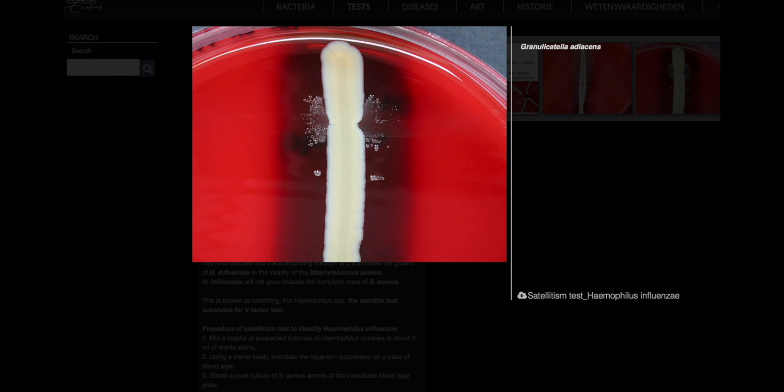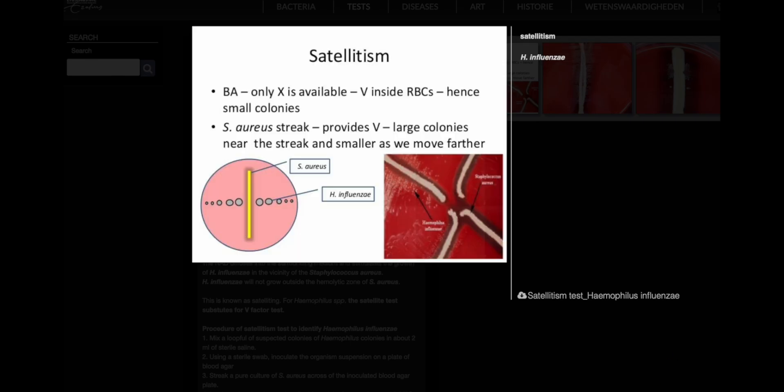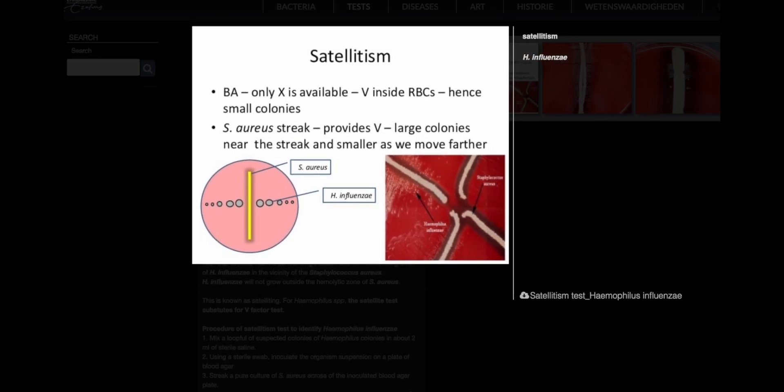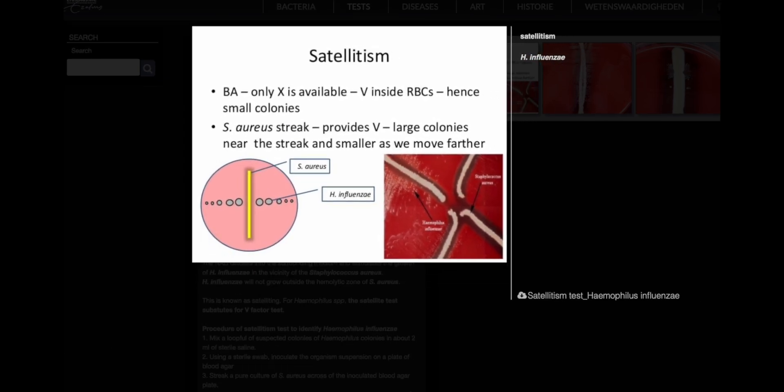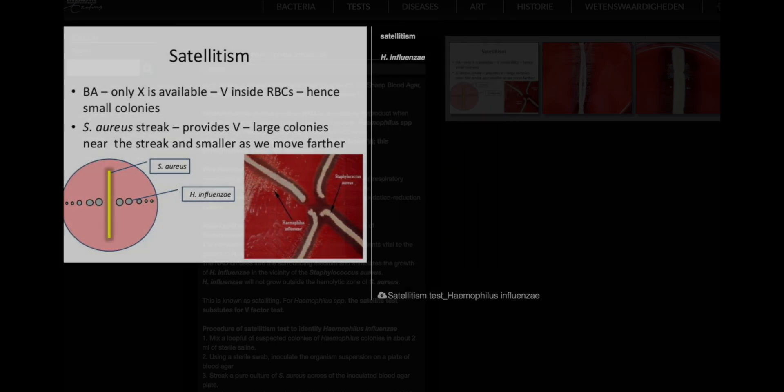Poem of the Satellitism Test: On blood's red stage, a tale unfolds. Haemophilus seeks its story told. X and V, the factors it craves, in satellitism's dance it saves. Staph aureus, a generous friend, NAD it gives, its bounty to lend. Near golden colonies, growth takes flight. Haemophilus thrives, bathed in light.